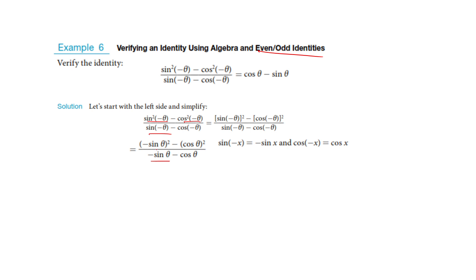So far, all we've done is apply the even and odd identities. Now let's do some algebra — we've made some substitutions. Let's square the terms in the numerator. If I square these, the negatives are just going to drop out — it's like a negative one in front, and if you square a negative one it just goes away. So I can rewrite it like this.